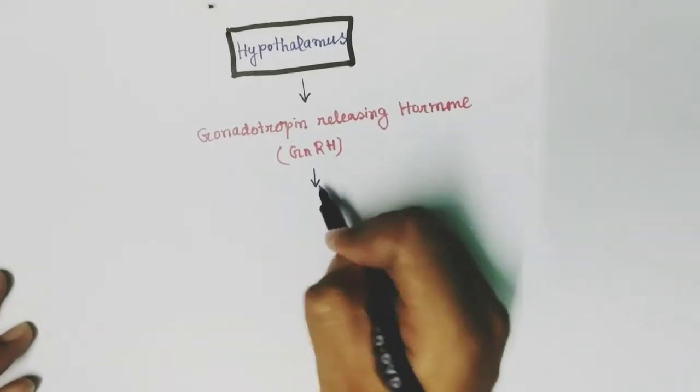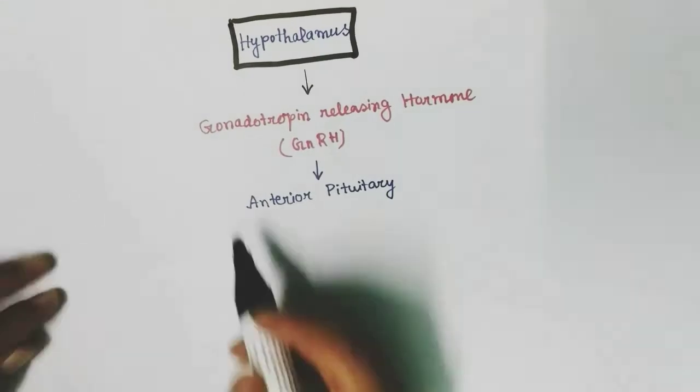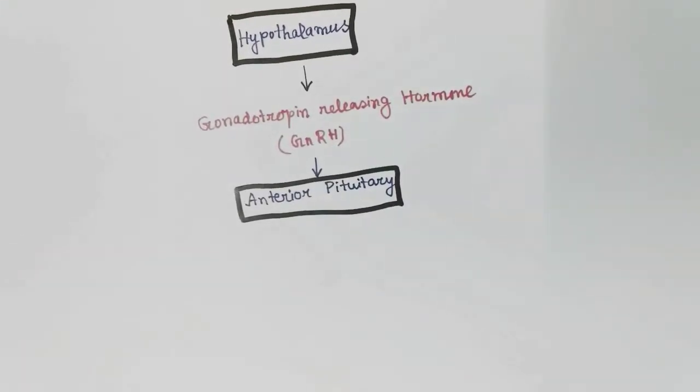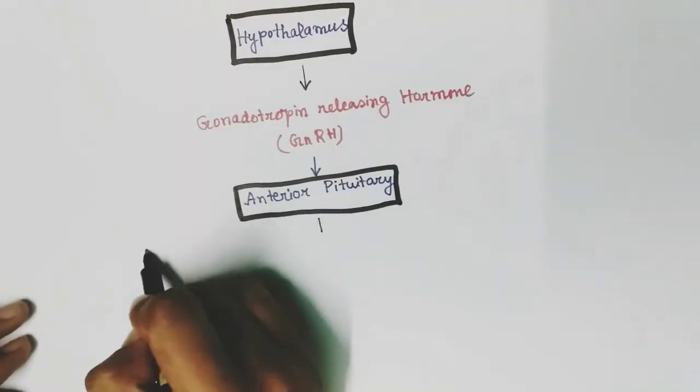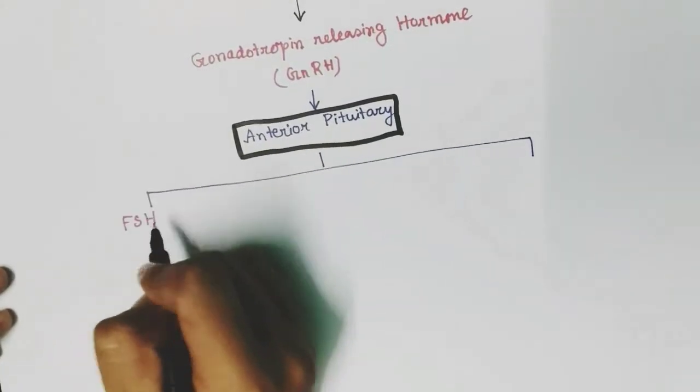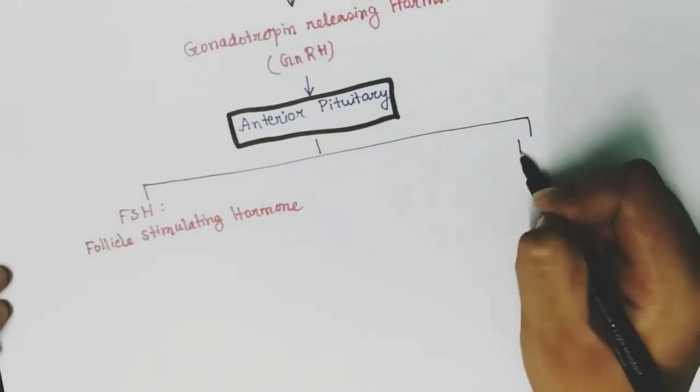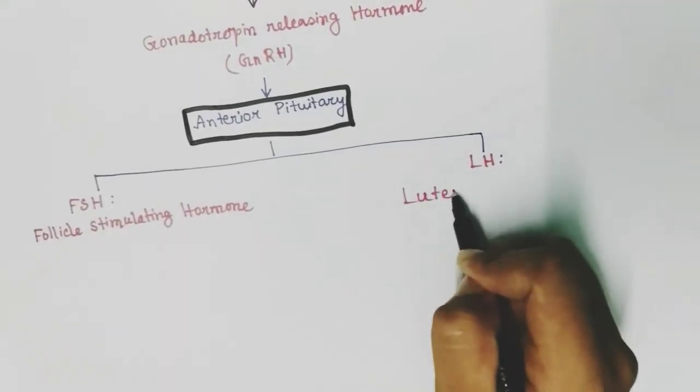GnRH has its effect on the anterior pituitary just below the hypothalamus. By the effect of gonadotropin-releasing hormone, the anterior pituitary releases two hormones: FSH, that is follicle-stimulating hormone, and LH, that is luteinizing hormone.